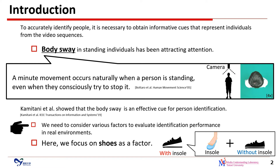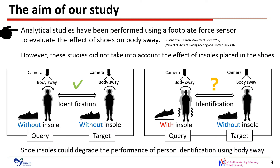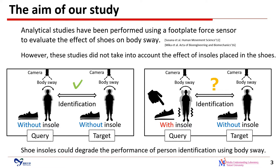We need to consider various factors to evaluate accuracy in real environments. Here, we focus on shoes as a factor. In the field of biomechanics, analytical studies have been performed using a foot-plate force sensor to evaluate the effect of shoes on body sway. However, these studies didn't take into account the effect of insoles placed in the shoes. For example, when without-insole features are used as query samples, identification succeeds. In contrast, when with-insole features are used as query samples, identification fails. Shoe insoles could degrade the performance of person identification using body sway.